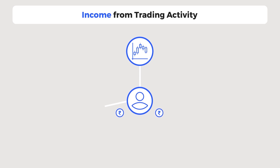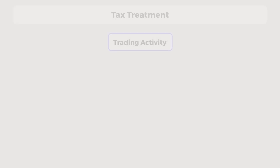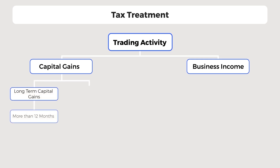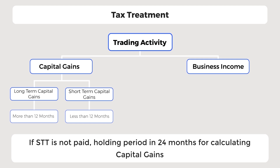Income from trading activities can be divided into capital gains income or business income for income tax purposes. Usually, income from delivery-based trading is treated as capital gains. When STT (security transaction tax) is paid, like in the case of listed equity shares and mutual funds, it is long-term capital gains if sold after 12 months and short-term capital gains if sold within 12 months. In case STT is not paid, like for unlisted equity shares, the holding period is 24 months.